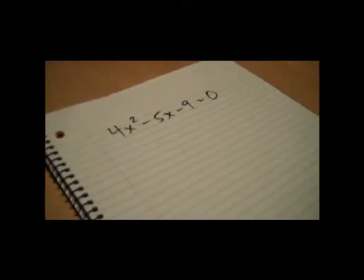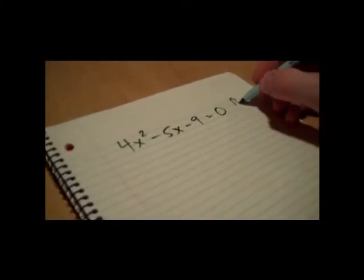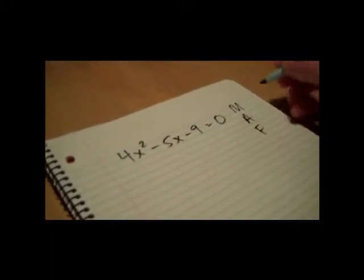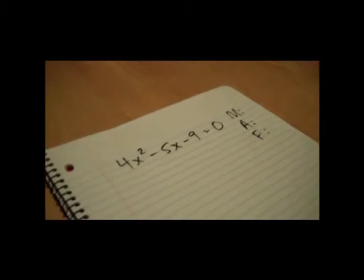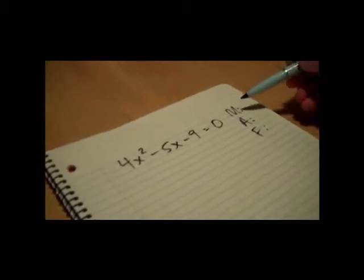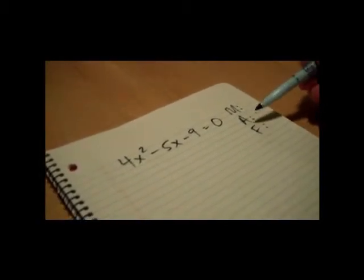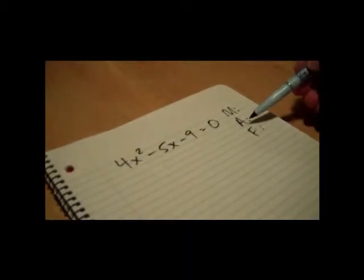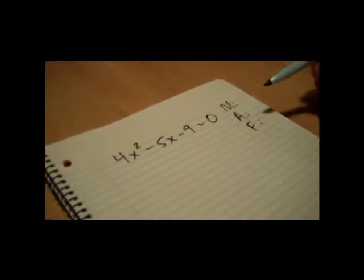All right, this is called the MAF process for solving a quadratic equation. Basically, you write M, A, and F on the right side. What this stands for is multiply, what two numbers add to, and then what their factors are.